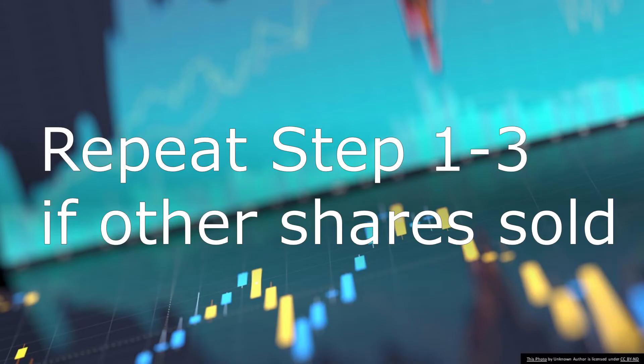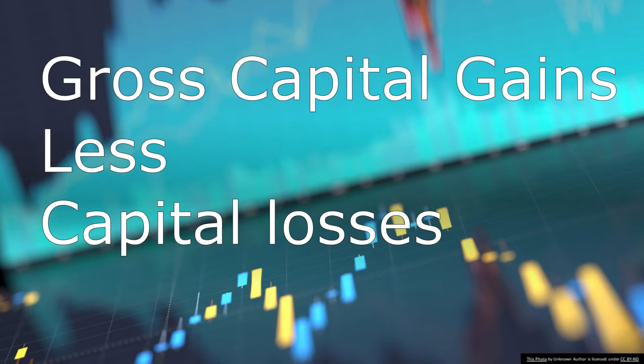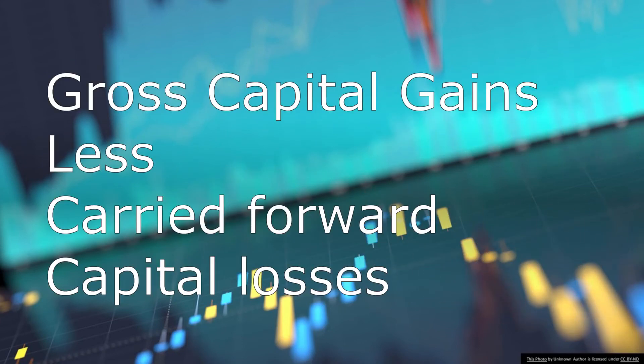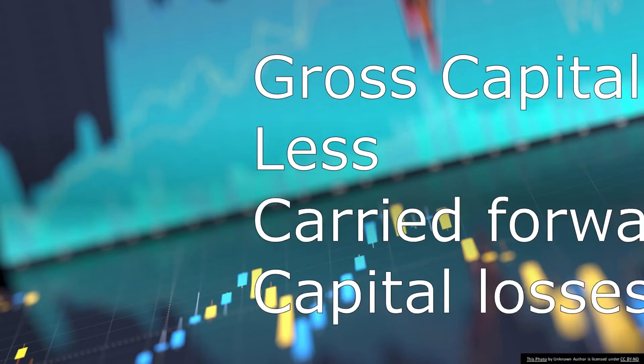Step 4: If you had sold other investments this year, you would need to repeat steps one to three for each CGT event you have had this financial year. Step 5: Subtract your capital losses from your capital gains. If you have no allowable capital losses then there's nothing to subtract. If you have a net capital loss carried forward from previous years you should subtract this now.